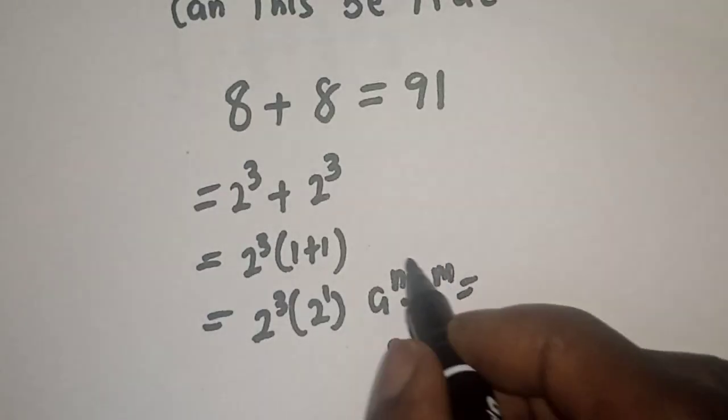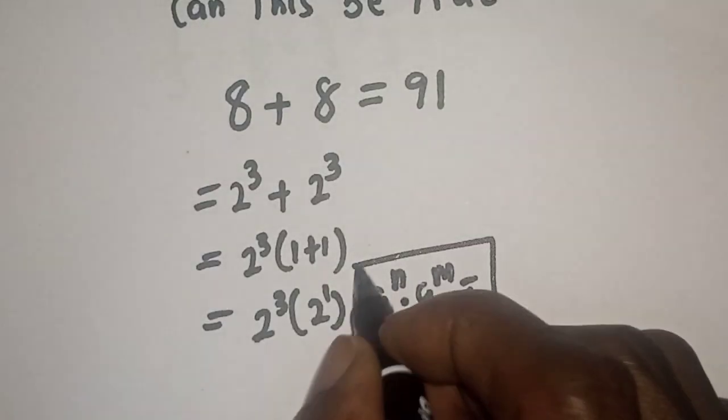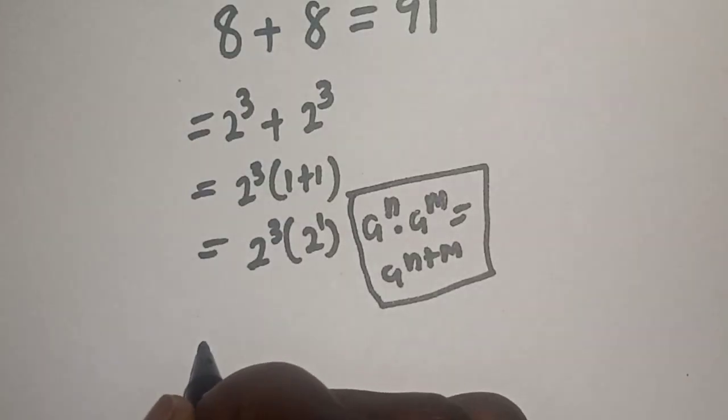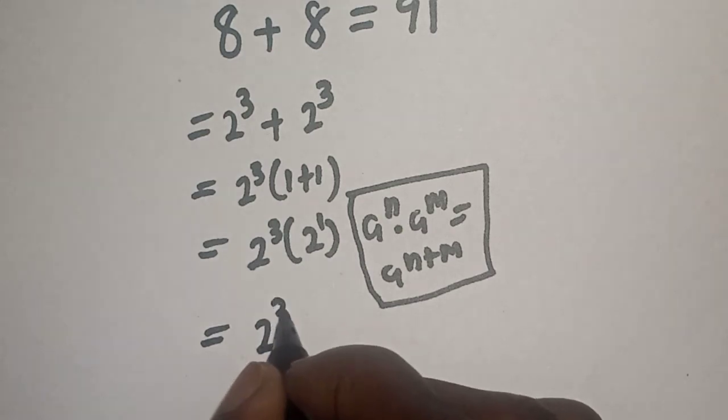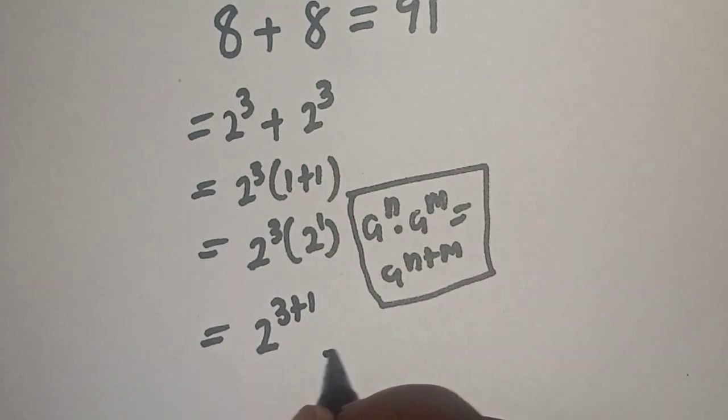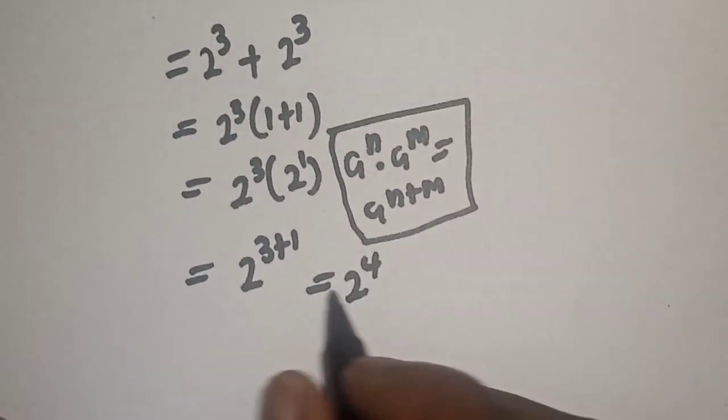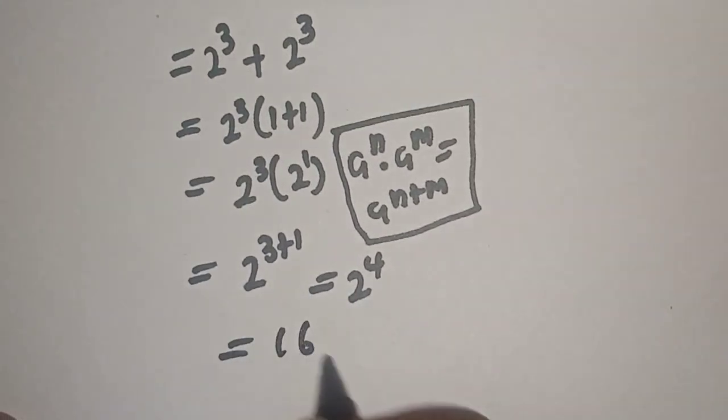Also, 2 raised to power 1. And then, this is equal to 2 raised to power 3 plus 1 which is equal to 2 raised to power 4. And 2 raised to power 4 is equal to 16.